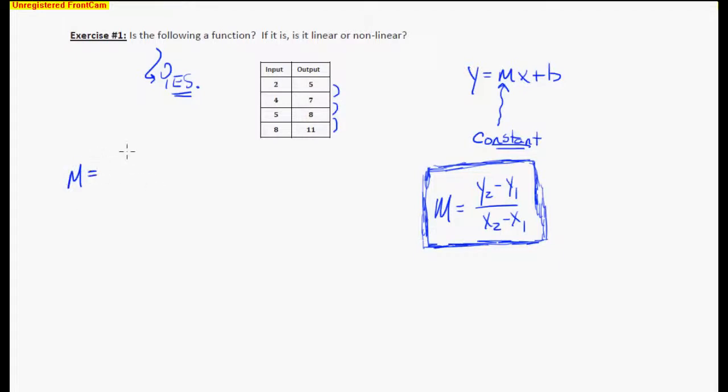So here we go. We're going to take the slope in between these first two points. So we're going to take our y values, which is our output. We're going to go 7 minus 5 over 4 minus 2. And what are we going to get? We're going to get 2 over 2, which is 1. Then we're going to take these two in red here. That's going to be 8 minus 7 over 5 minus 4, which is 1 over 1, which is also 1.